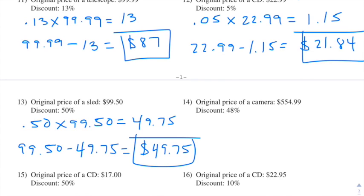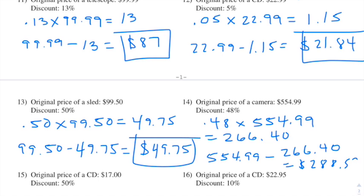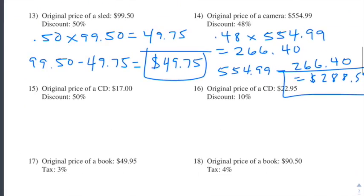Number fourteen: 48% of $554.99 — we do 0.48 times 554.99 and get $266.40. We subtract that from $554.99 minus $266.40 and we end up getting $288.59. That's our final answer.